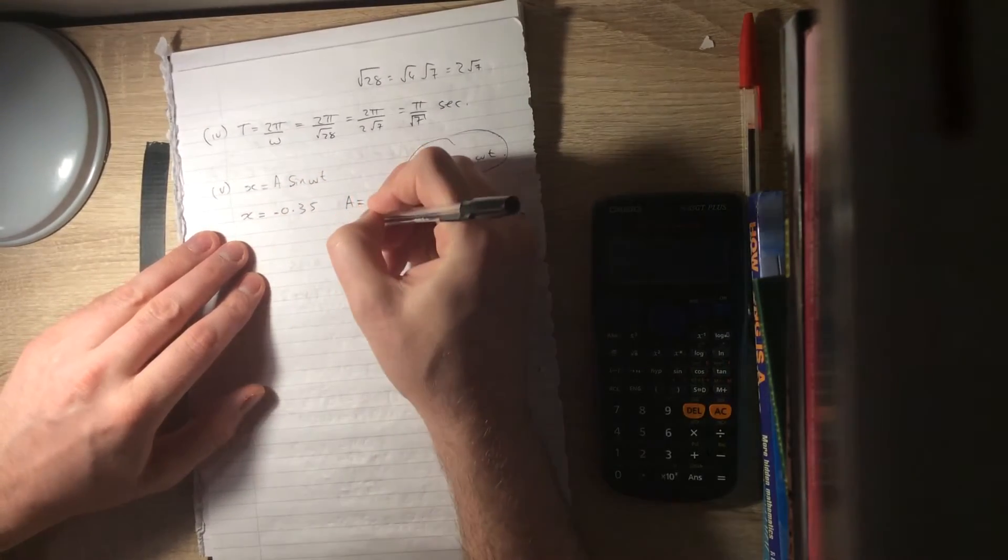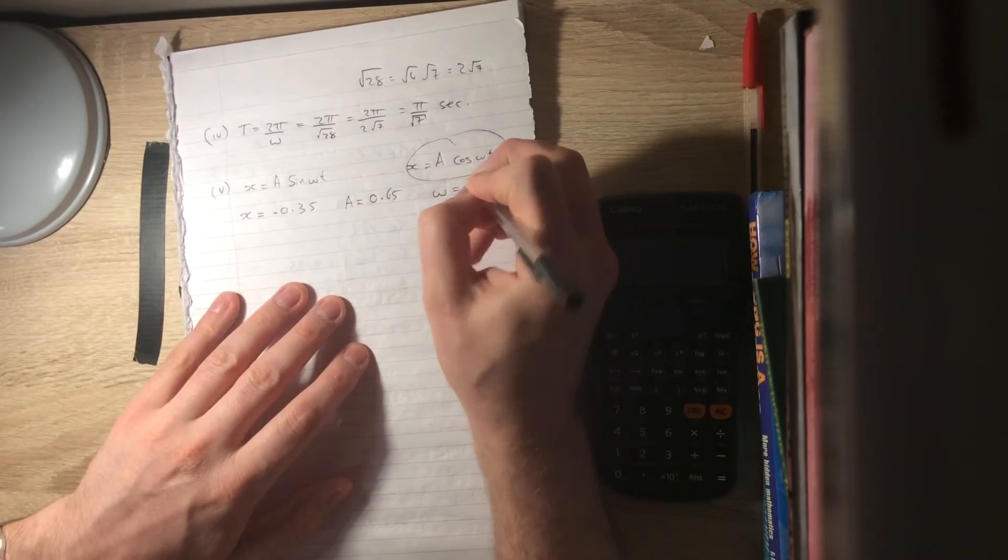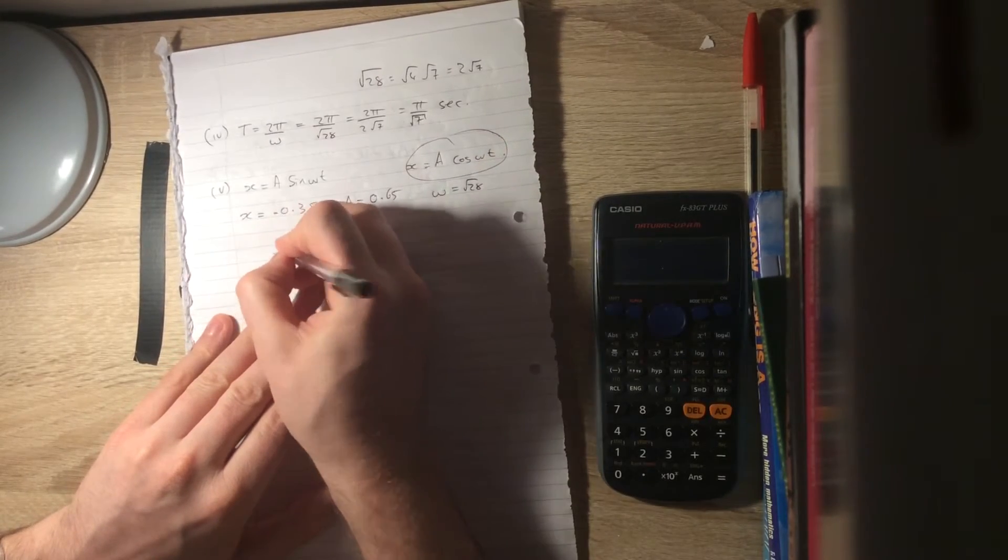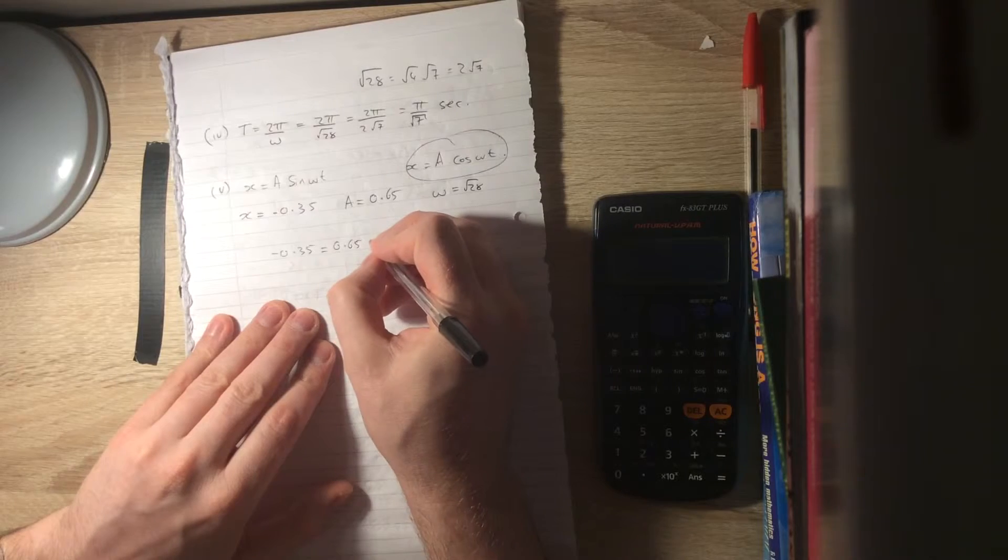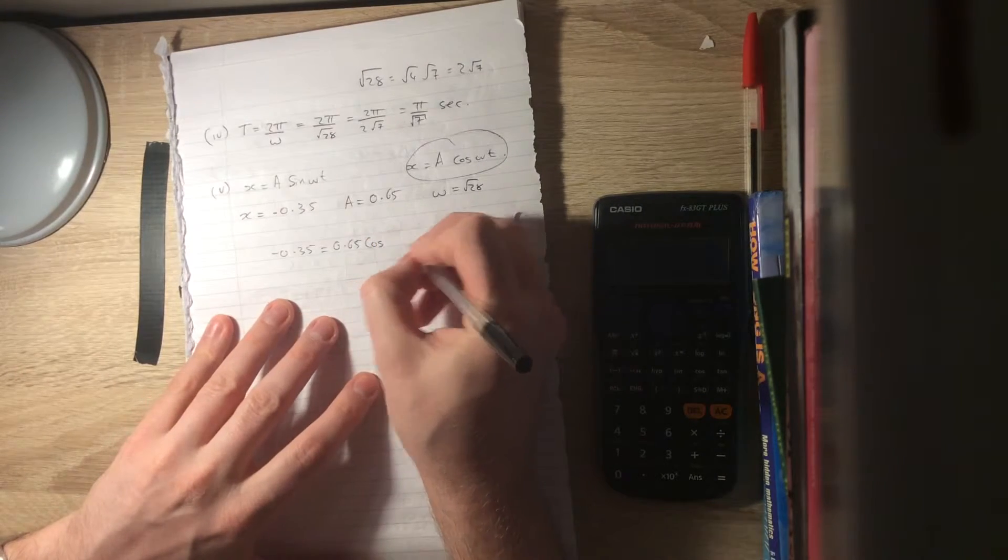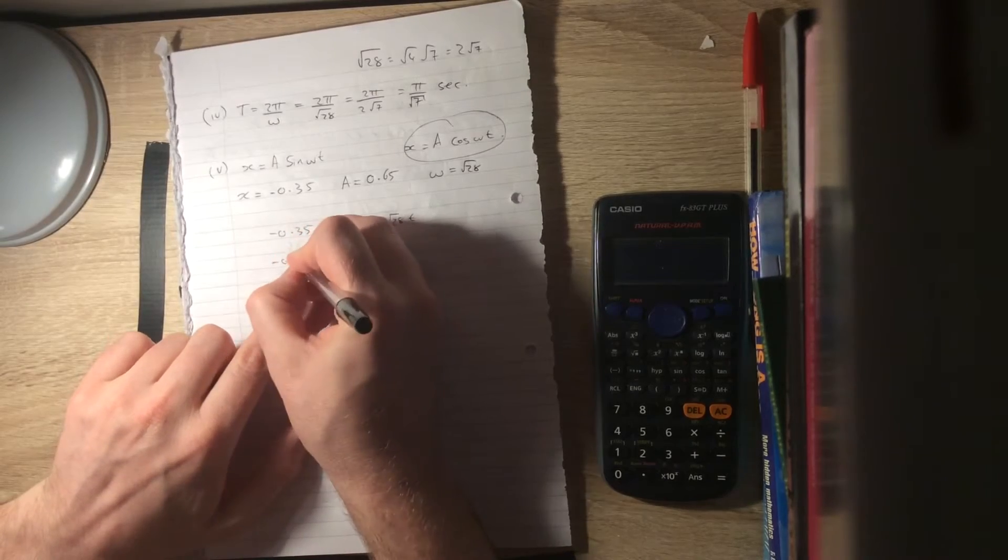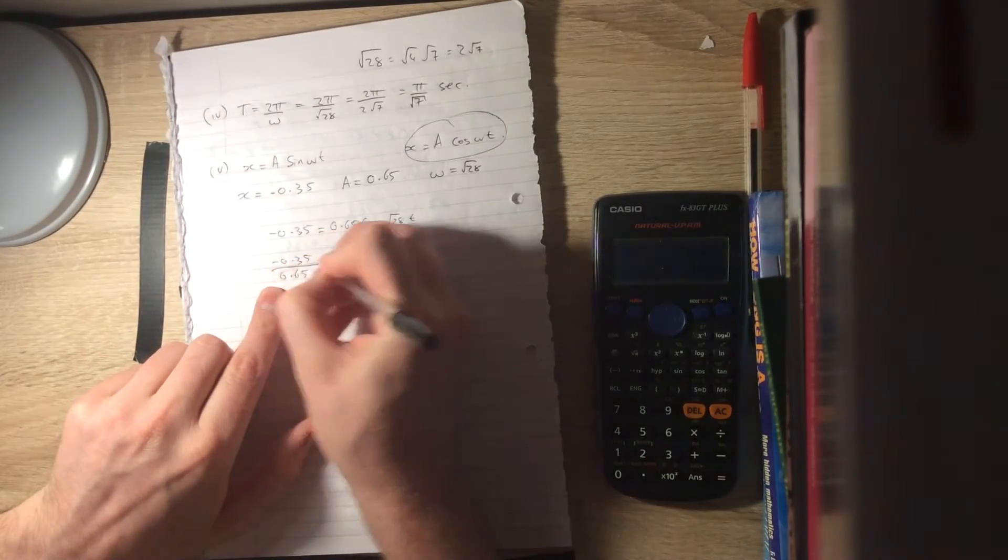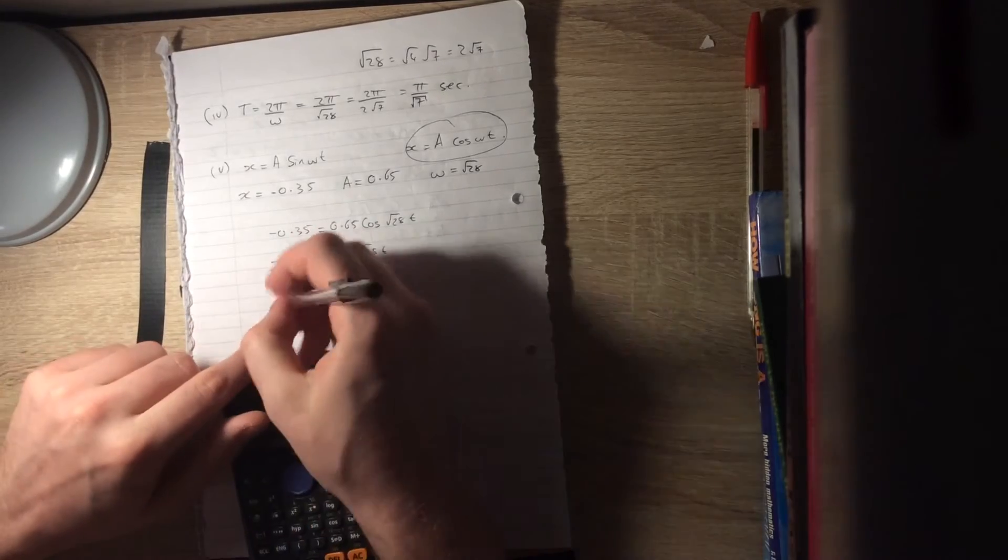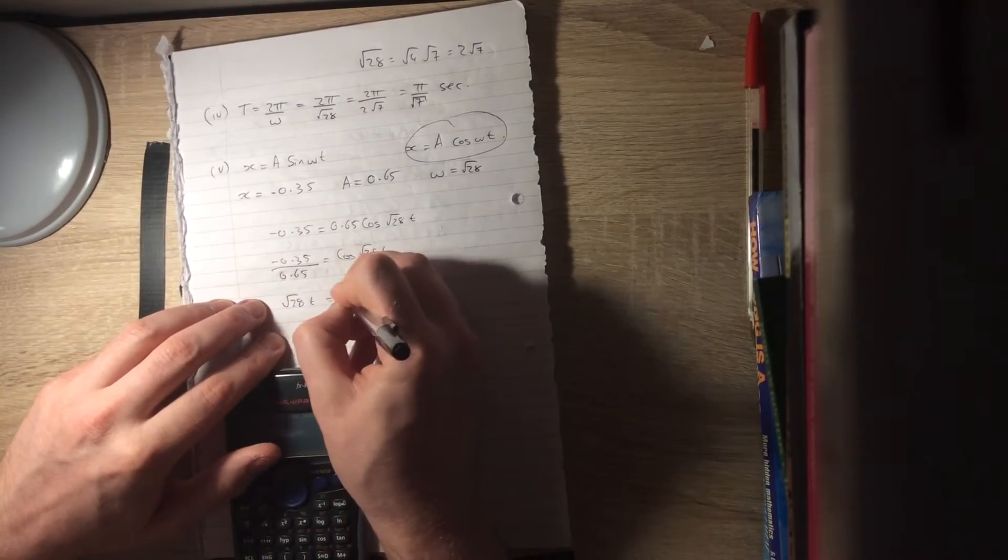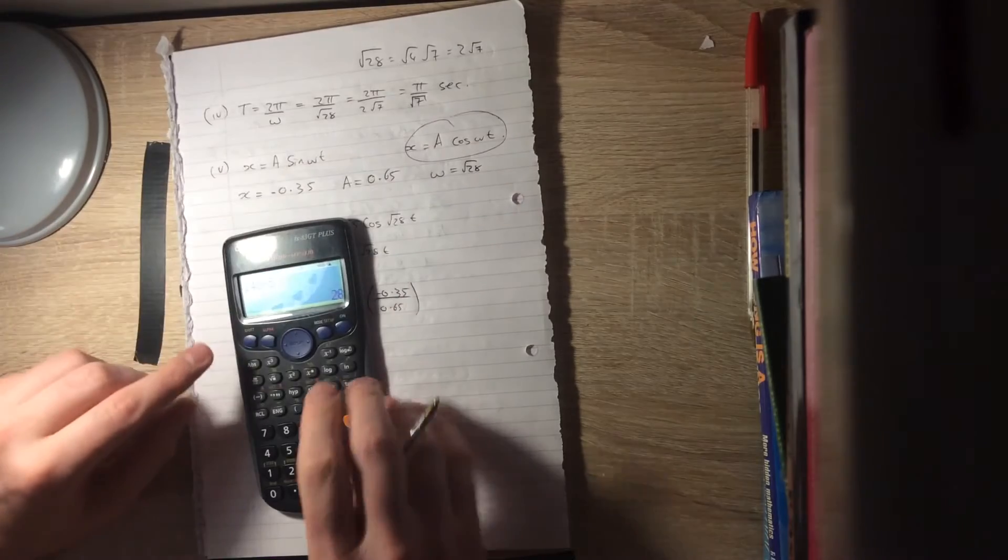Our amplitude, as it has been throughout the problem, is 0.65, and omega is root 28. So we can fill this in by saying minus 0.35 equals 0.65 cos root 28 t. So we want to solve that. We're going to say minus 0.35 over 0.65 is cos root 28 t. Now, if you go and say root 28 t is the inverse cos of minus 0.35 over 0.65.